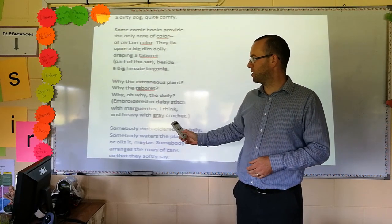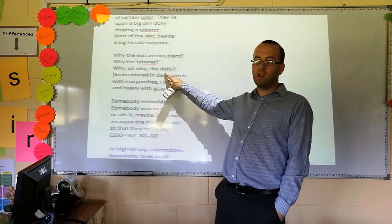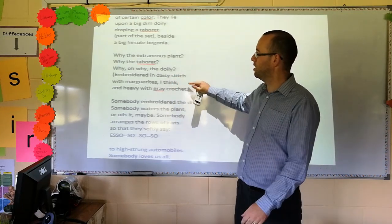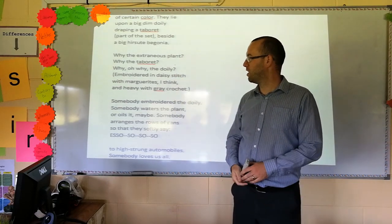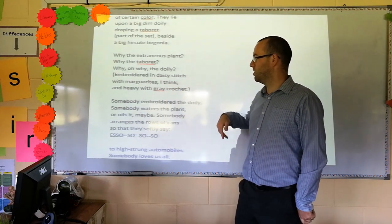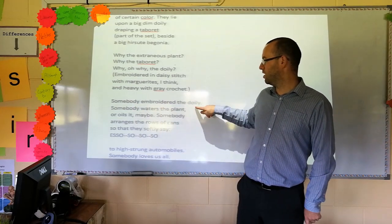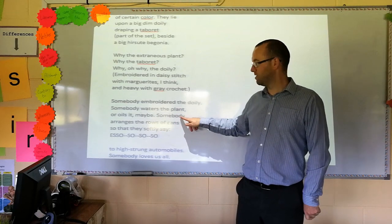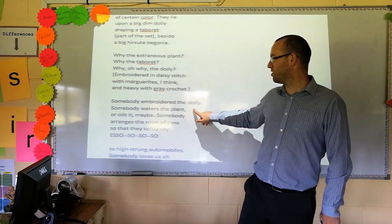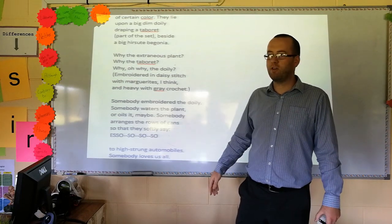So, Elizabeth Bishop thinks about this. Why the extraneous plant? Why the extra plant? Why the tabaret? Why, oh why, the doily? Why do these greasy, dirty... Remember how many times the word dirty was repeated? Four or five times? Why are these fancy things there? The doily, in fact, is embroidered in a daisy stitch with marguerites. It's heavy with grey crochet. She goes on. She thinks some more. She realizes, somebody embroidered the doily. Somebody waters the plants. Or, here comes a joke. Or, oils it, maybe. Anyway, somebody embroidered the doily. Somebody waters the plants. Somebody arranges the rows of cans and, as they softly say, so, so, so.